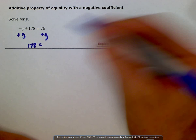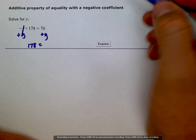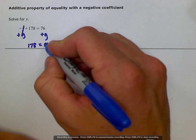So that will give us 178, that cancels here, and 76 plus y.